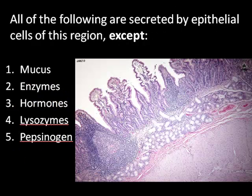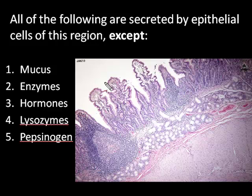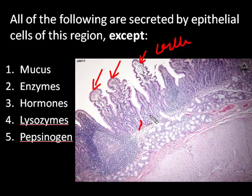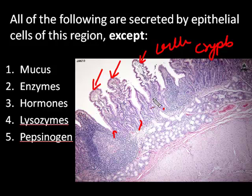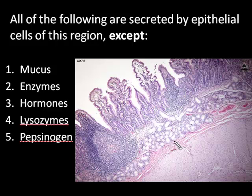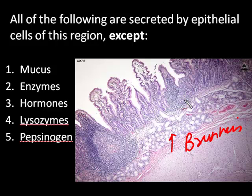The second question asks: all of the following are secreted by epithelial cells of this region except which one. First let's identify this region. You can see these finger-like projections — these are villi — and then you can see invaginations going in, which are called crypts of Lieberkühn. Therefore, this is a section taken from the small intestine.